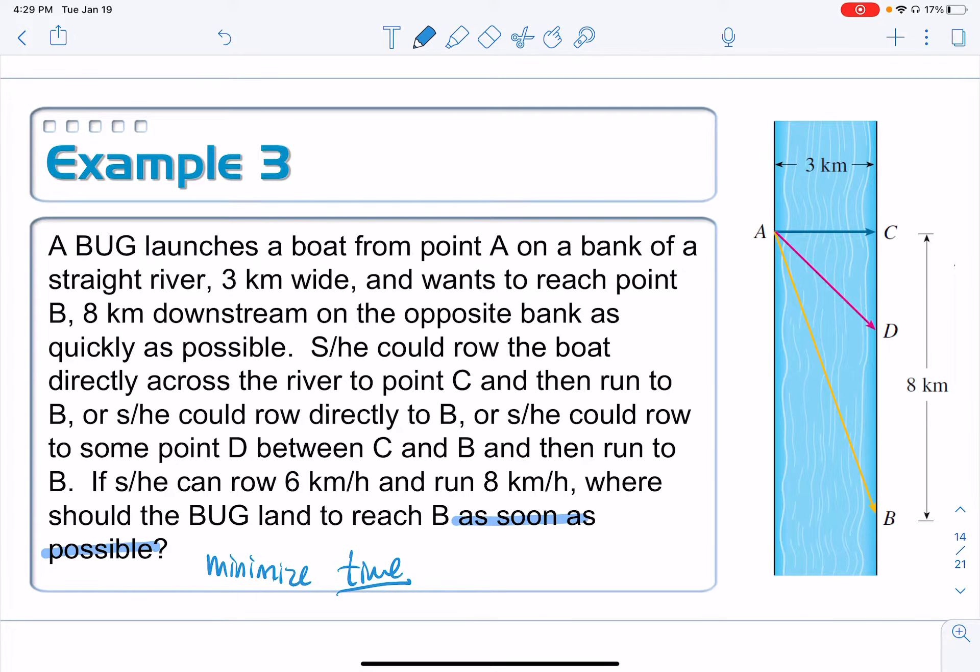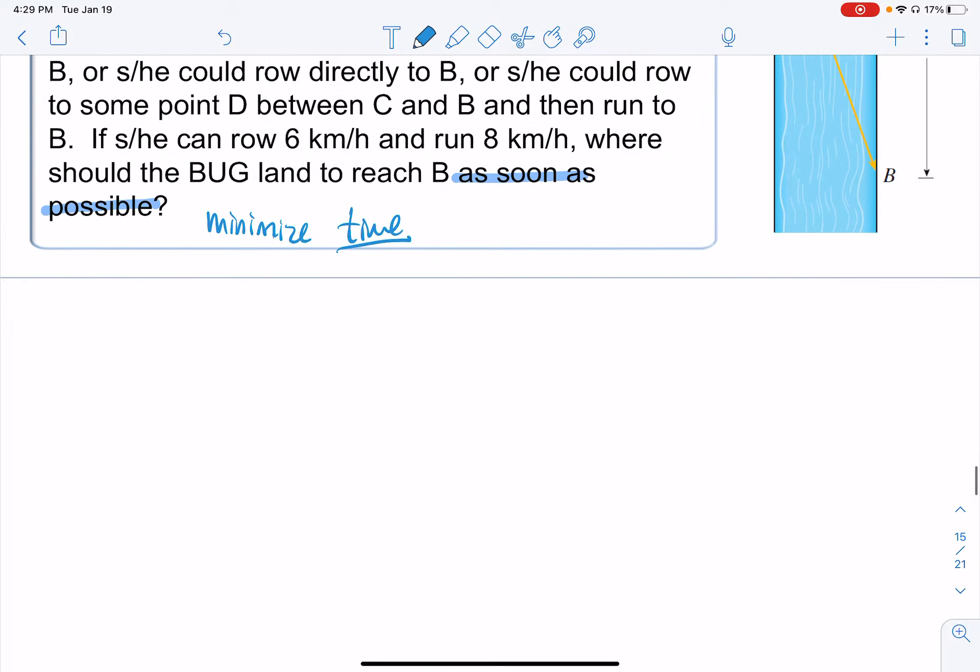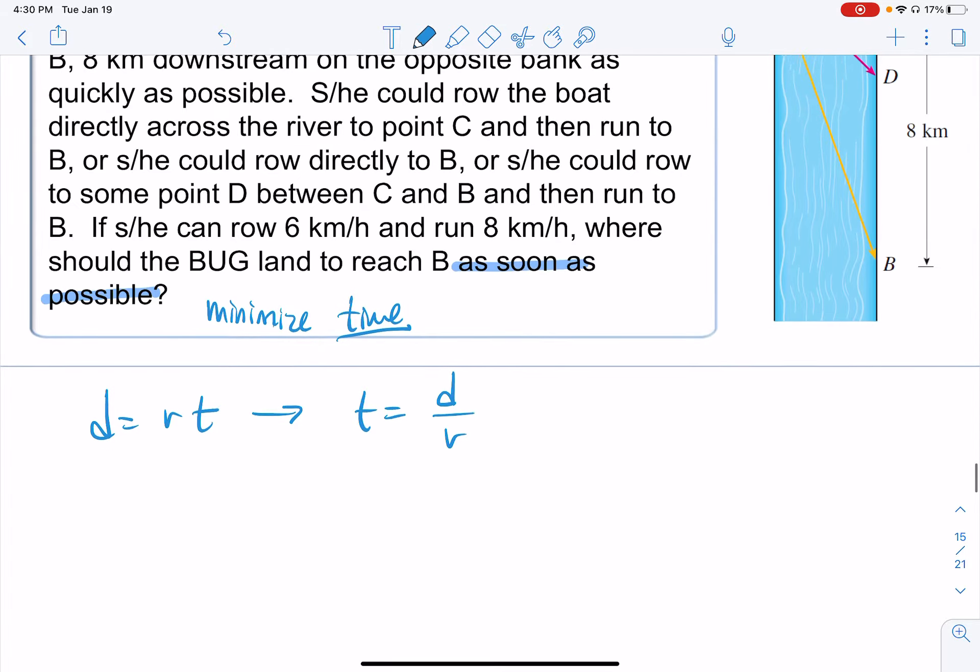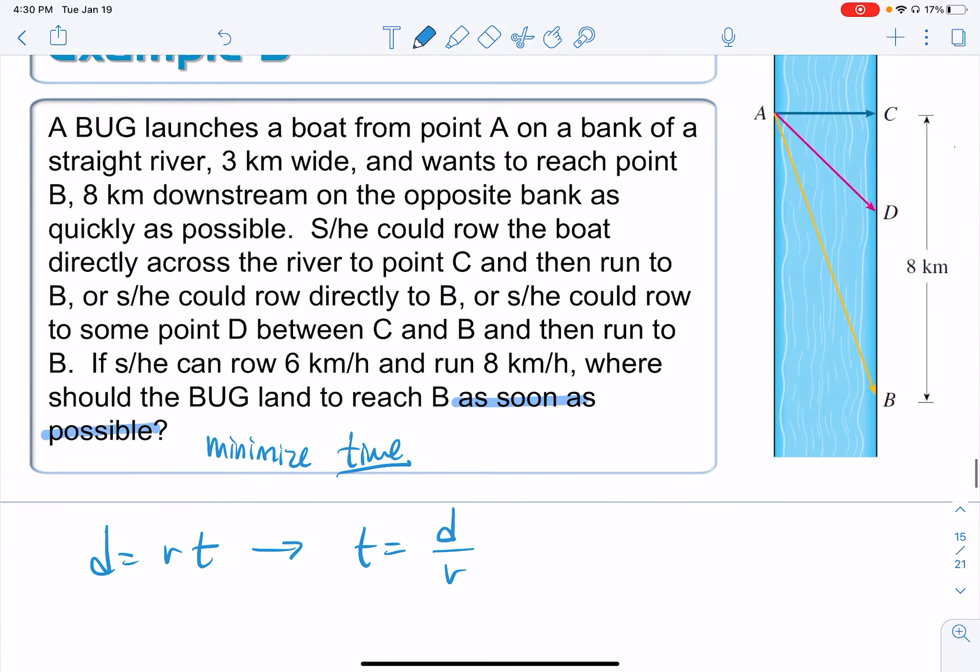We are basically coming up with an equation for time. Let's see if we can use some grade school knowledge here about distance, rate, and time. You might remember that distance is equal to a rate times a time. But we want to solve this for T here. So our time equation is going to be equal to some distance divided by a rate. We did that because we have two different rates and two different distances that we're talking about.